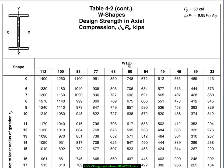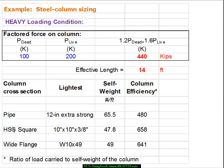So this is a W10 by 49. So we'll go record that. We have W10 by 49. The 10 means its nominal depth is 10 inches and its weight is 49 pounds per foot. And when we take the 440,000 pounds and divide it by 14 times 49 we get 641.